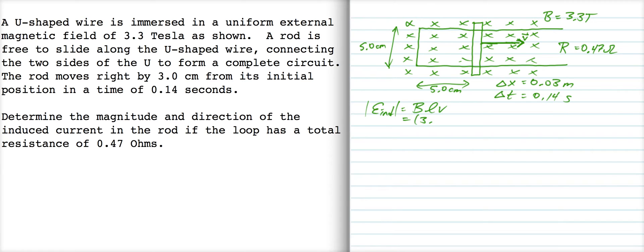And the external field is 3.3, the length of the rod is 5 centimeters, so 0.05. And then the velocity, that's the change in x over the change in time.